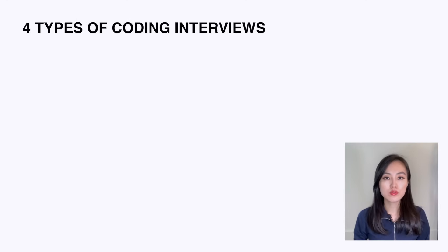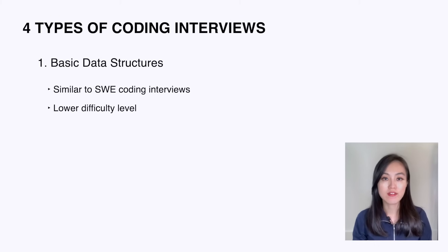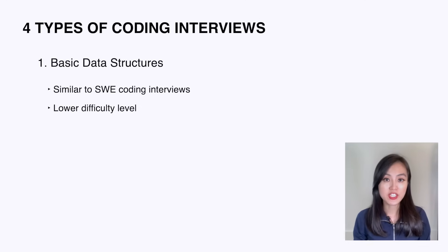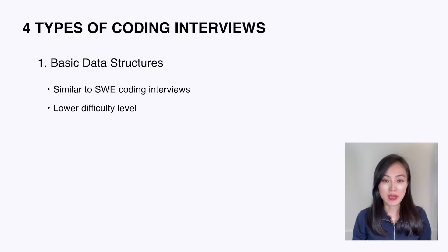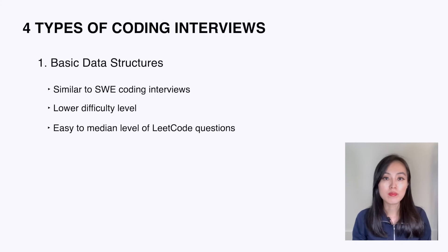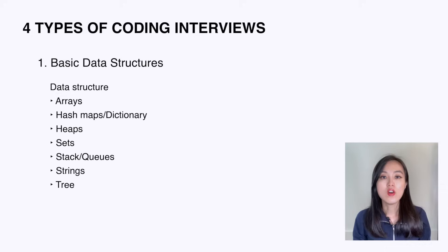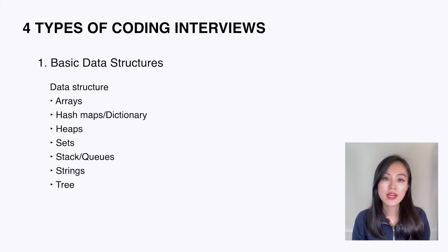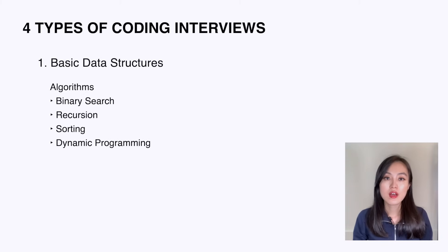Let me walk you through four different types of coding questions. The first type involves basic data structures — it's very similar to a coding interview for software engineers, but the difficulty level is lower. Based on many people's experience, you will most likely get easy to medium level questions based on LeetCode's categorization. Common data structures include arrays, hash maps or dictionaries, heaps, sets, stacks, queues, strings, and trees. For algorithms: binary search, recursion, sorting, and dynamic programming.